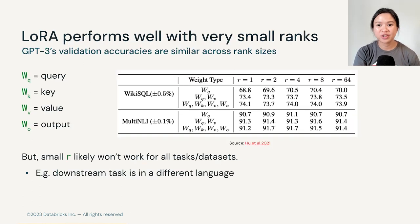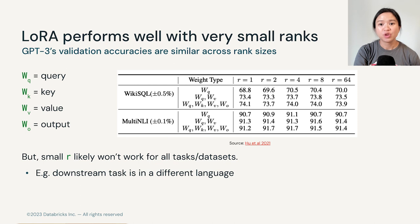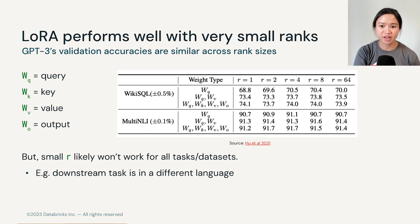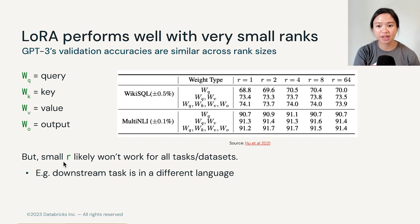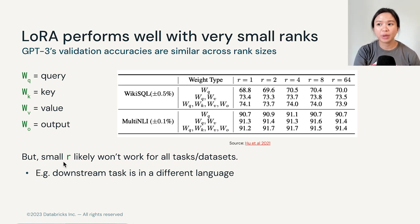The next natural question to ask is: how do we determine the rank of these matrices? We can treat that as a hyperparameter to search over. Generally, different rank sizes produce roughly similar validation accuracies, at least for GPT-3. Intuitively, a small r likely won't work for all tasks or datasets, especially in cases where the downstream tasks are much more different from the original tasks the base model was trained on. Researchers have also experimented with updating different combinations of weight matrices for decomposition, but there were no clear trends to take away.